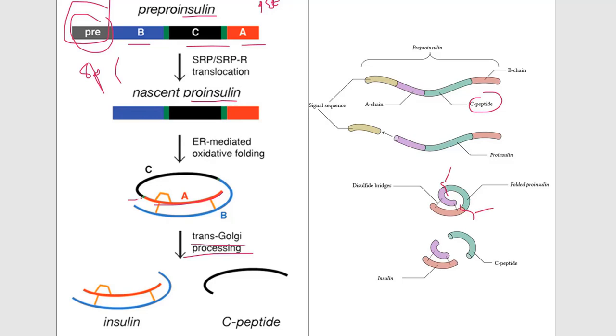Here also you can see one and two. By two cleavage sites, this C chain will get eliminated, and the A and B chains will be joined together with the help of disulfide linkages. These are the disulfide linkages.